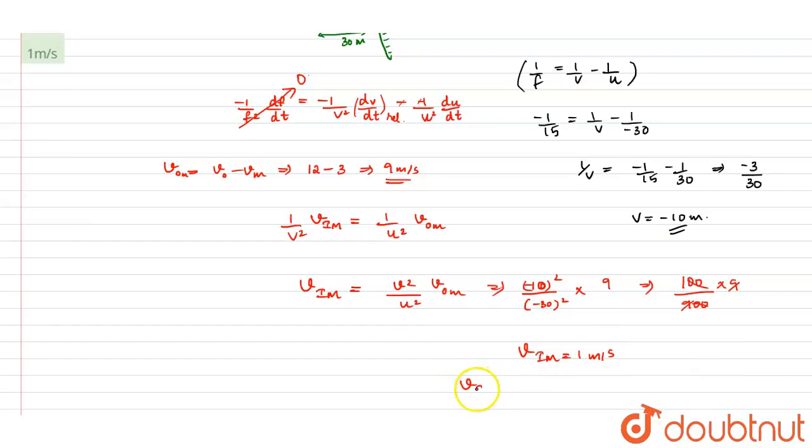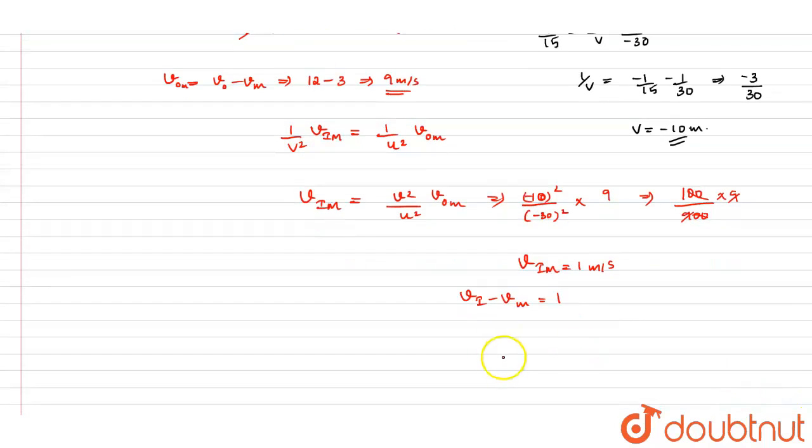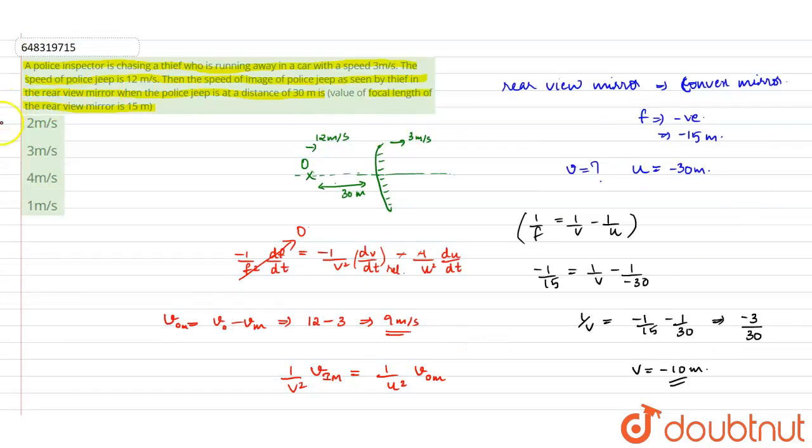That is, v_i minus v_m equals 1. So v_i will be 1 plus v_m. That is 1 plus 3. So v_i will be 4 meters per second. This is the answer.